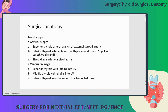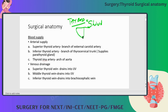Coming to thyroid anatomy — what is thyroid basically? Thyroid is nothing but a shield, like a shield in front of the neck.